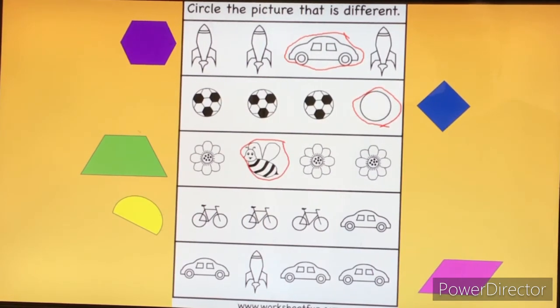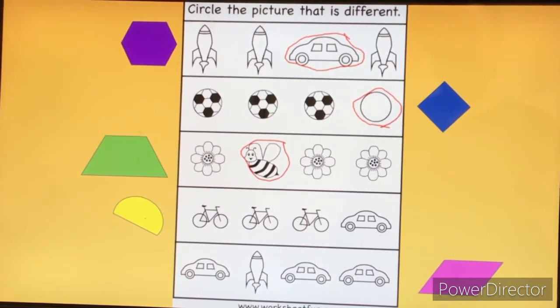Let's go down to the yellow semicircle, or half circle. Which one of these pictures is different? There's that car. It's not the same as a bike.